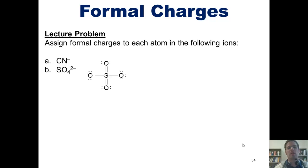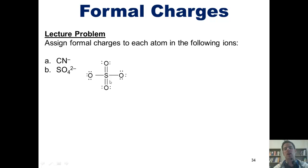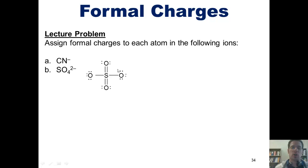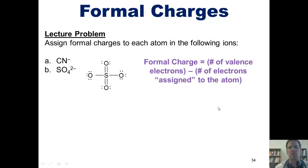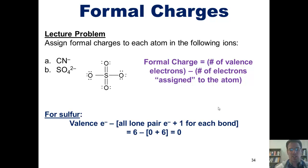There is a different Lewis structure we can draw for sulfate — this one. You'll note that the sulfur atom in this Lewis structure has more than an octet. Because sulfur is in row three of the periodic table or below, that can actually happen. To calculate the formal charges for each atom in this Lewis structure, I use the same formula. For sulfur here, the number of valence electrons is six, the number of lone pair electrons is zero — there are no dots around the sulfur — and it is experiencing six bonds. Thus, the overall formal charge for sulfur in this Lewis structure equals zero.